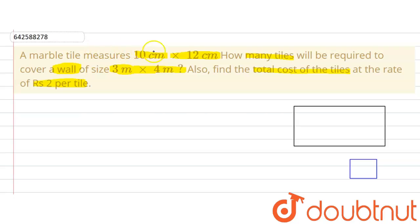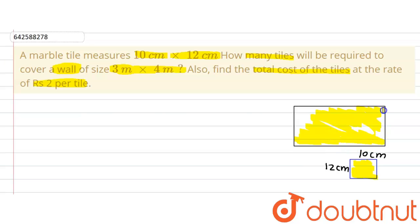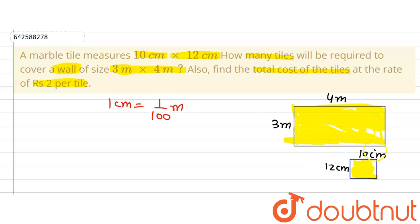There is a marble tile of 10 by 12 cm. The length is 12 cm and the width is 10 cm. The wall is to be covered by tiles of these dimensions. The dimensions of the rectangular wall are 3 meters by 4 meters — width 3 meters, length 4 meters. We will convert the tile dimensions to meters: 12/100 meters and 10/100 meters.